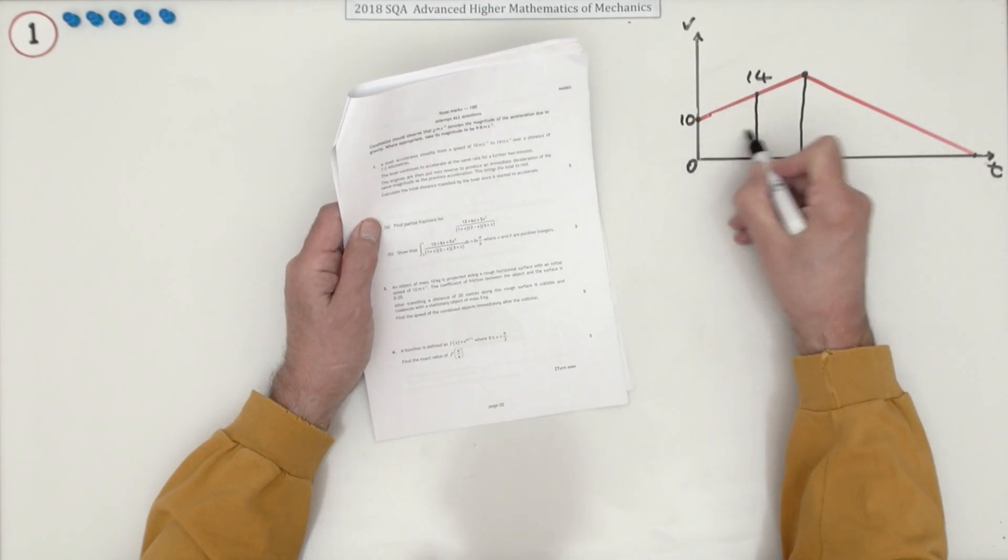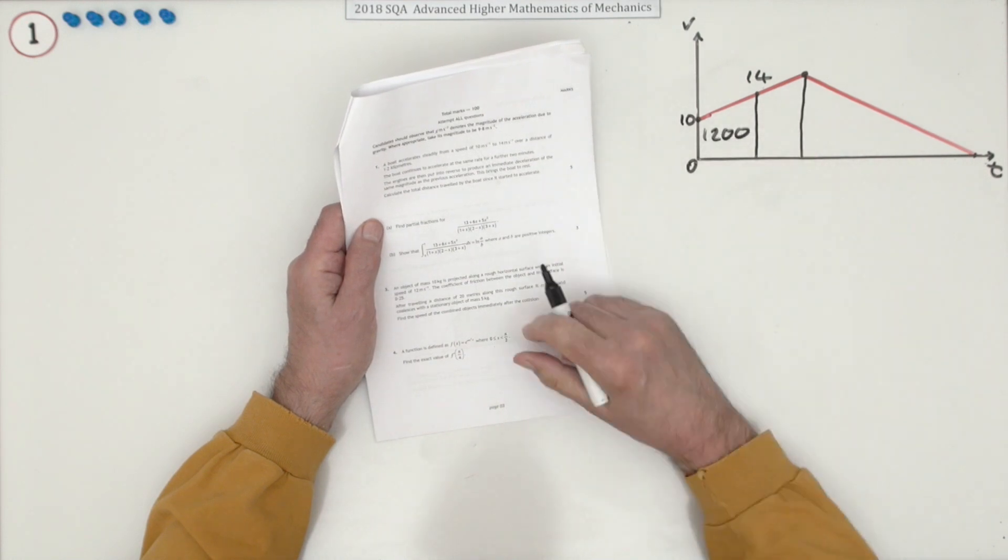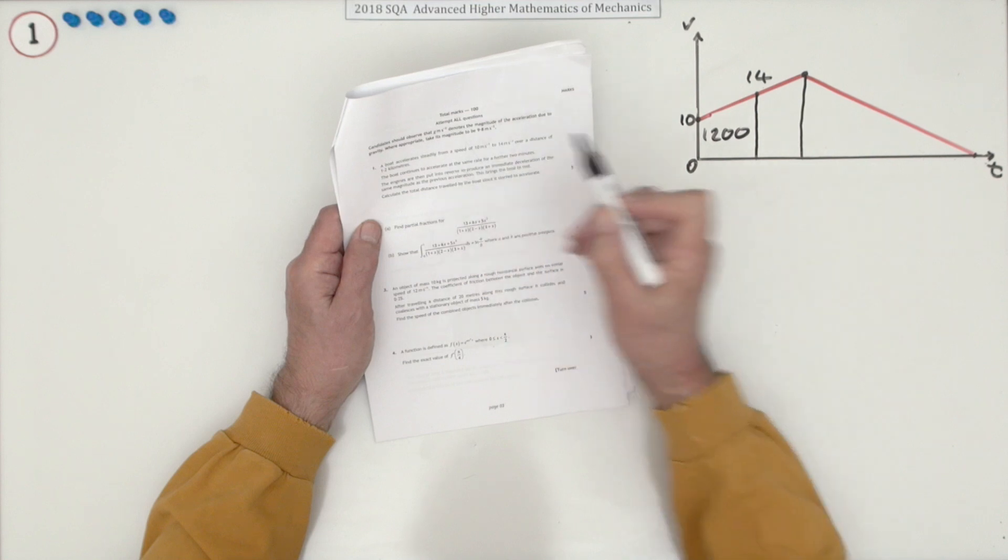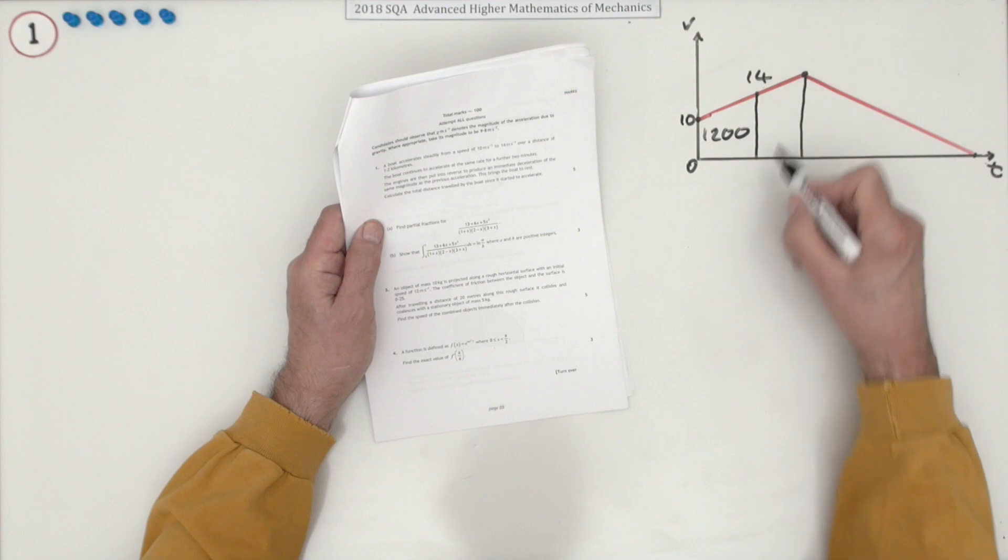Still, I know the area here then is going to be 1200 meters, 1.2 kilometers. It continues to accelerate. It said it was a steady acceleration, so it's a straight line, at the same rate for a further two minutes.